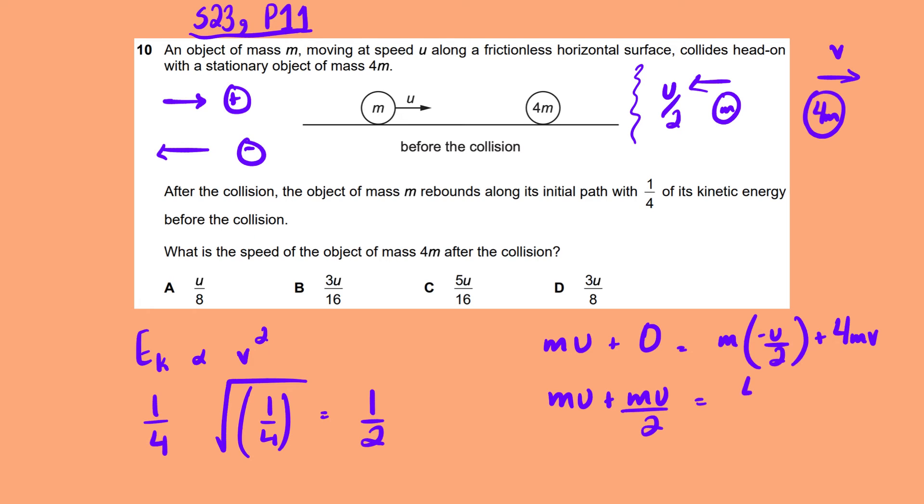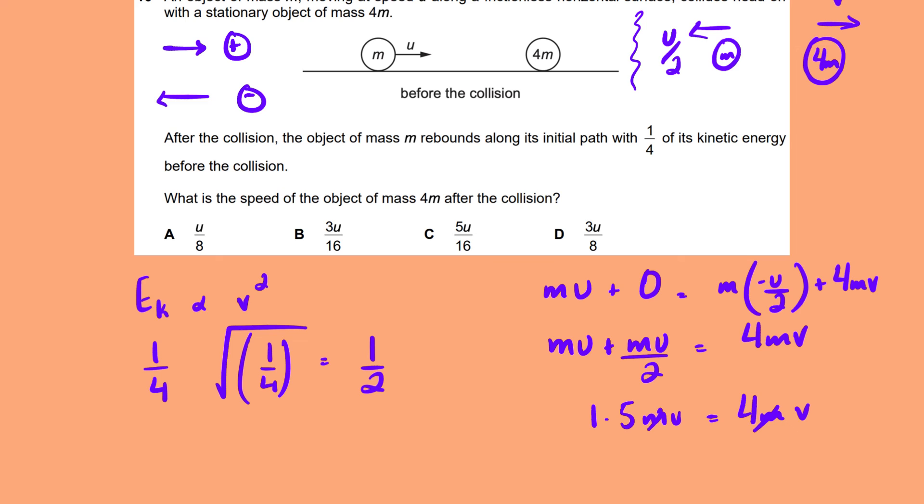So this becomes 1.5 mu basically. If I write it as decimals, it equals 4mv. The m's cancel. So 1.5 upon 4, basically what does this mean? 3 upon 2 over 4. So 3 upon 8 u. So it's option D.